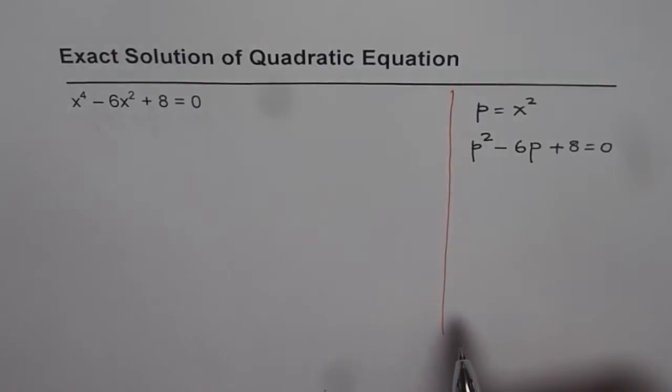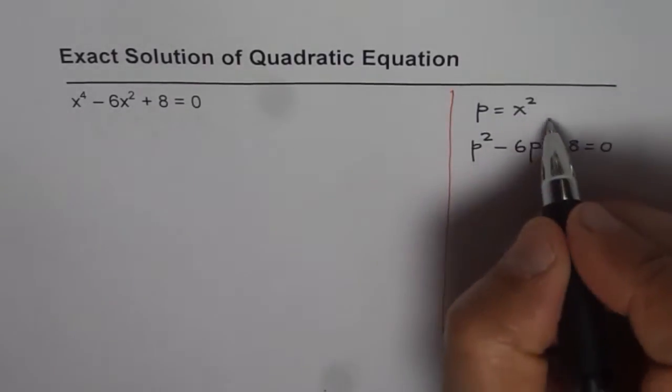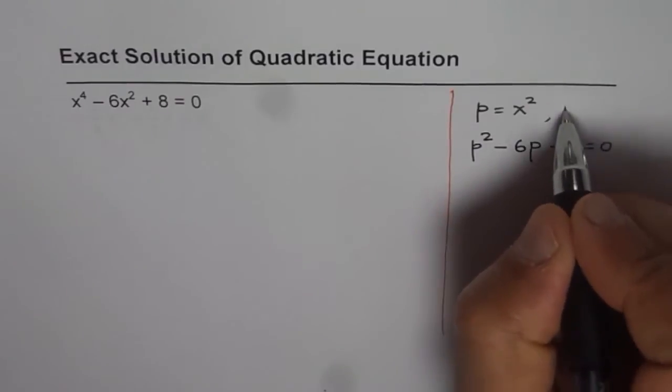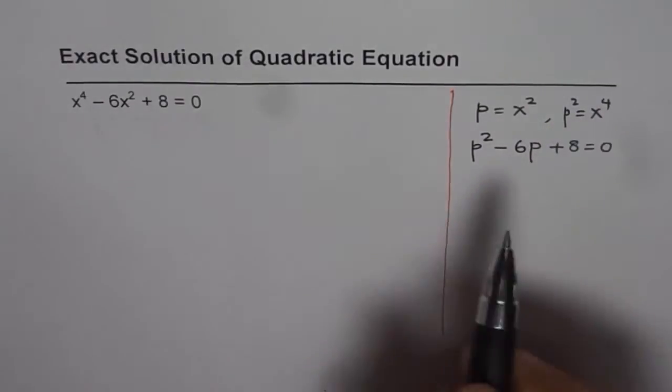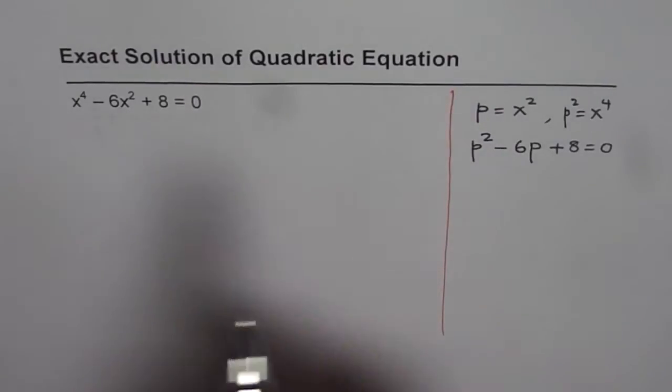It becomes a quadratic equation. If p equals x squared, then p squared equals x to the power of 4. So I can write x to the power of 4 as p squared minus 6p plus 8 equals 0. Now it becomes a quadratic equation.